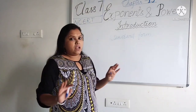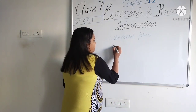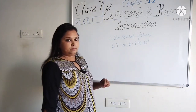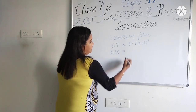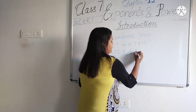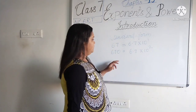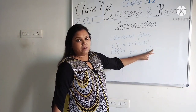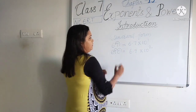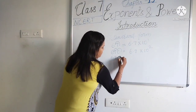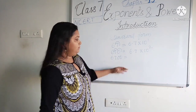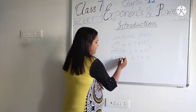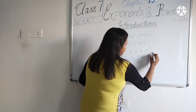Now we will discuss standard form — how to write a number in standard form. For example, 67 can be written as 6.7 × 10¹. If we take 670, we express it as 6.7 × 10², because we shift the decimal point 2 places. For 67, we shift only 1 place, so the power is 1. Similarly, for 6700, we shift the decimal 3 places, giving 6.7 × 10³.